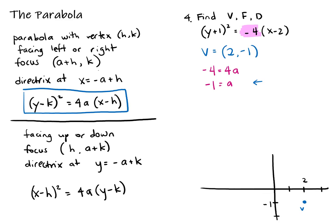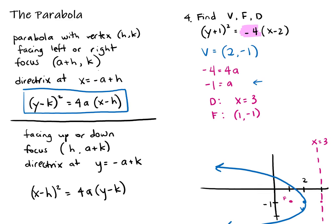Technically a = 1 since we always take a as a positive distance, but solving for the sign helps determine direction. Going one unit left from the vertex gives our focus at (1, -1). Going one unit right gives the directrix, the vertical line x = 3. So the directrix is at x = 3 and the focus is at (1, -1). We can sketch this as a left-facing parabola, and verify it by typing the equation into Desmos.